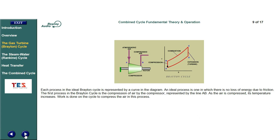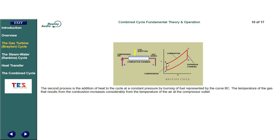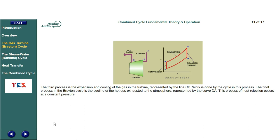Each process in the ideal Brayton cycle is represented by a curve in the diagram. An ideal process is one in which there is no loss of energy due to friction. The first process in the Brayton cycle is the compression of air by the compressor, represented by the line AB. As the air is compressed, its temperature increases. Work is done on the cycle to compress the air in this process. The second process is the addition of heat to the cycle at a constant pressure by burning of fuel, represented by the curve BC. The temperature of the gas that results from the combustion increases considerably from the temperature of the air at the compressor outlet. The third process is the expansion and cooling of the gas in the turbine, represented by the line CD. Work is done by the cycle in this process. The final process in the Brayton cycle is the cooling of the hot gas exhausted to the atmosphere, represented by the curve DA. This process of heat rejection occurs at a constant pressure.